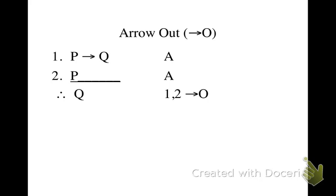And this makes sense because if we know that P arrow Q is true, and we know that P is true, well then Q must also be true, because that's the only way that P arrow Q can be true when P is true. Here we go.